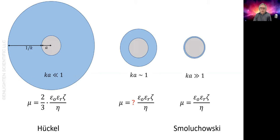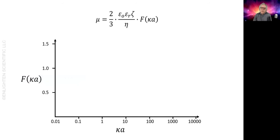We can write the equation with a multiplier that is a function of κa. This was first considered by Henry in the 1930s, and one of his functions looks like this. There's at least one instrument that incorporates this calculation of zeta potential from mobility.